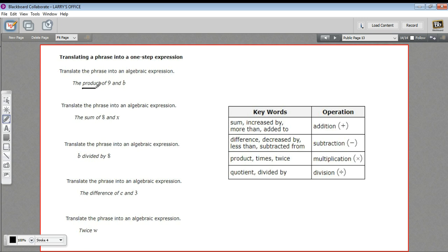The product of nine and b. Well, product is multiplication. So this is nine times b. The way we usually write that algebraically is just 9b. So when you smash the numbers and letters right next to each other, that implies multiplication. So the product of nine and b is 9b.